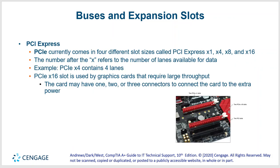PCI Express, also known as PCIe — so when you hear me refer to PCIe, that's PCI Express. It's much faster than PCI. It comes in different slot sizes: times one, times four, times eight, times 16. The 'X' refers to the number of lanes for data — the more, the better. The PCIe x16 slot is used by graphics cards because we want to be pushing a lot of data through.